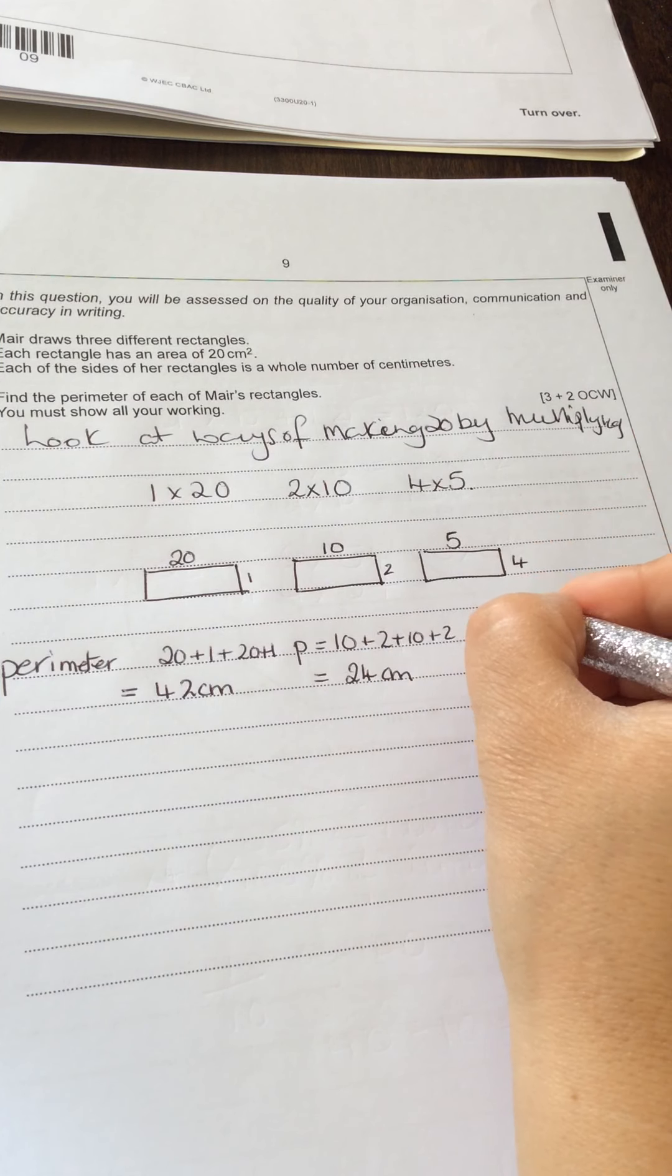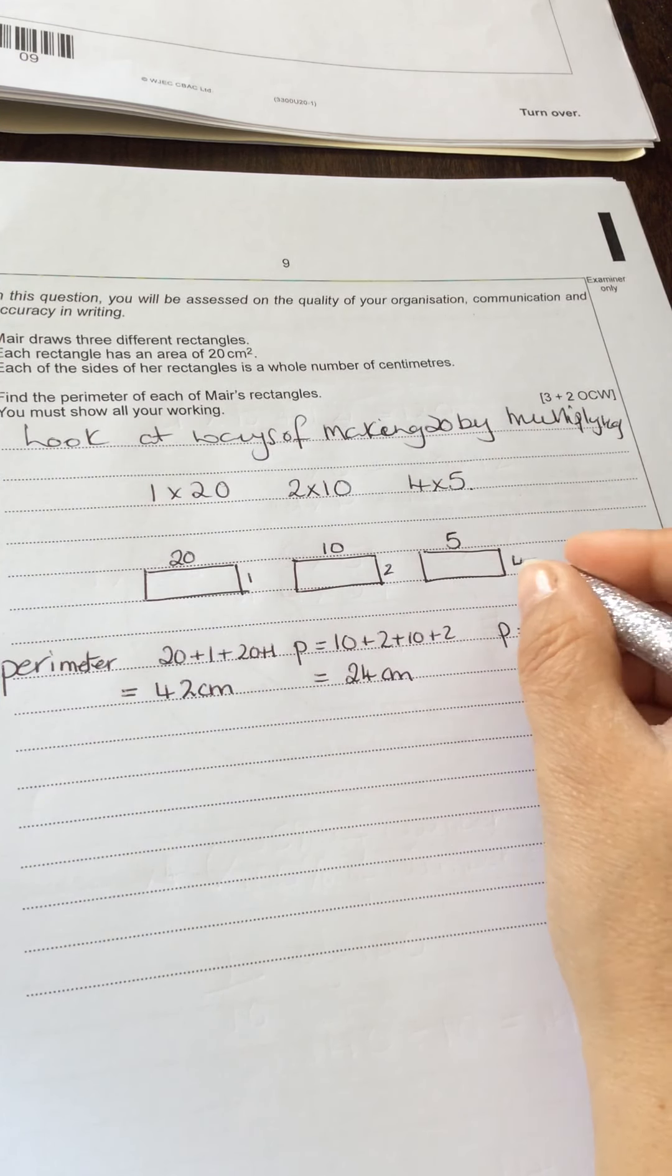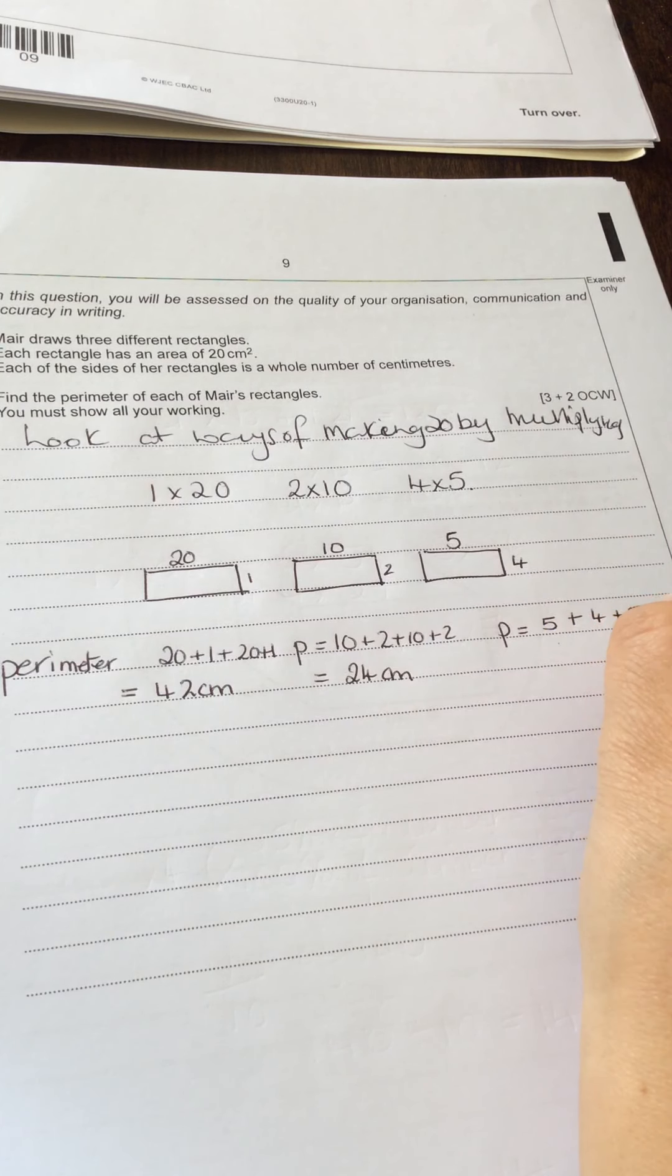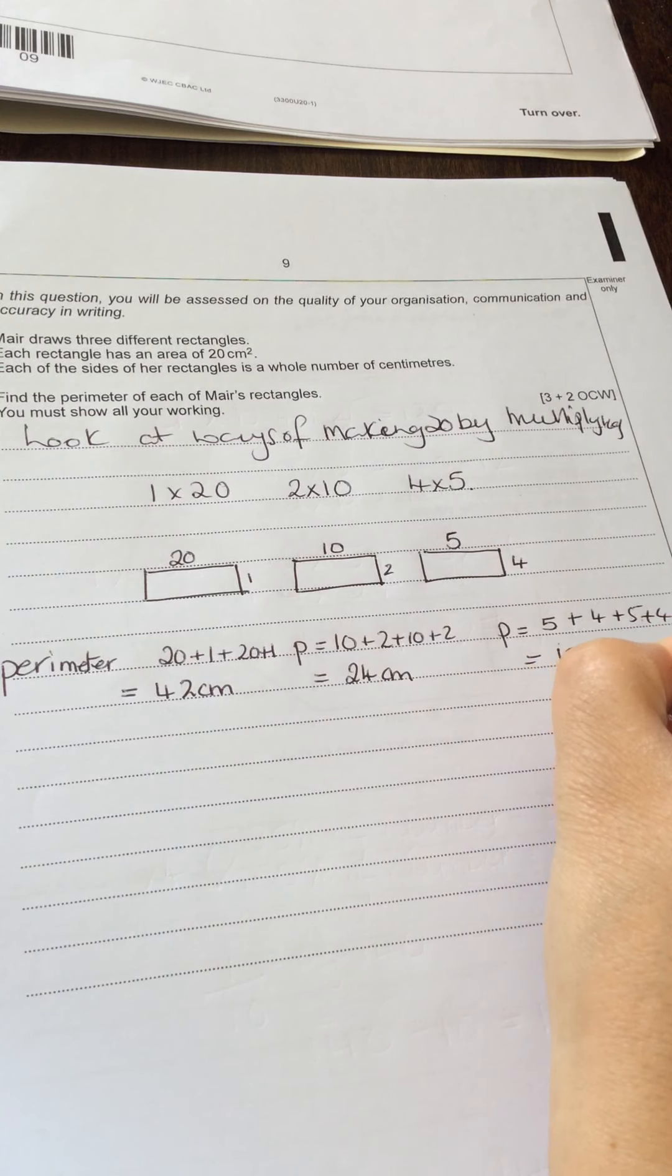And the last one, the perimeter would be a 5 plus the 4, add a 5, add a 4. 5 plus 4 is 9 plus 5 is 14 plus 4 is 18. So that would be 18 centimeters.